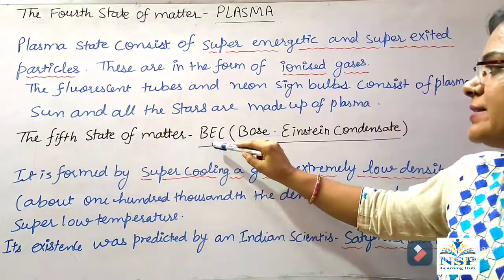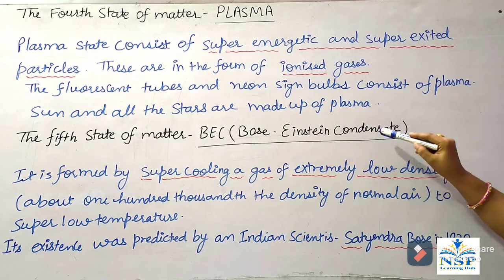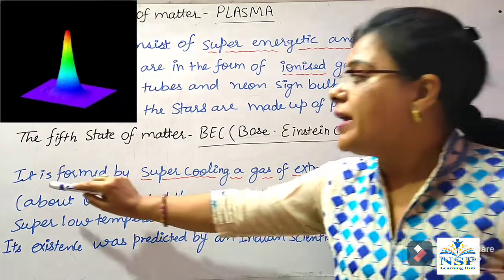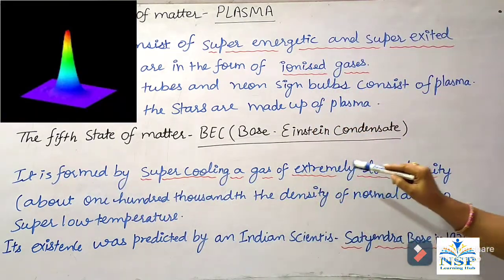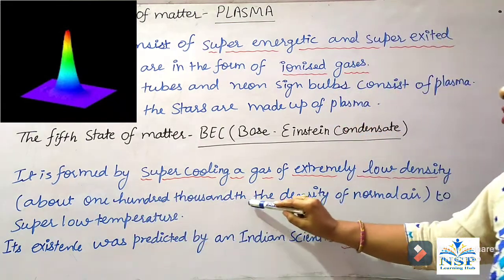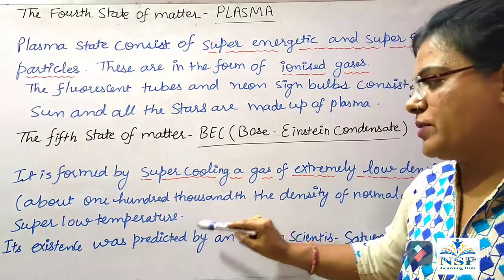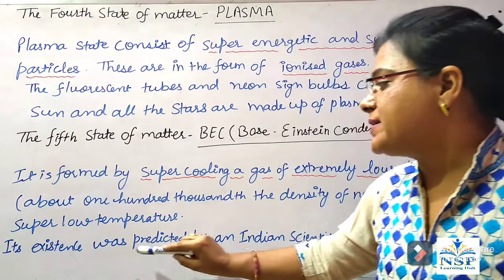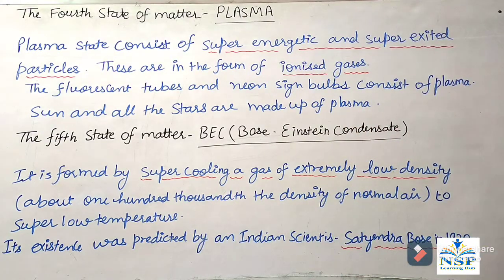The fifth state of matter is BEC — Bose-Einstein condensate. It is formed by super cooling of a gas of extremely low density, which is about 100,000th of the density of normal air, to super low temperature. Its existence was predicted by Indian scientist Satyendra Bose in 1920.